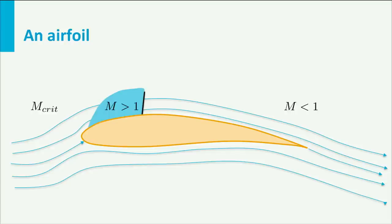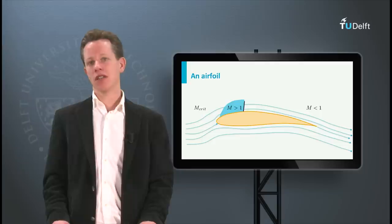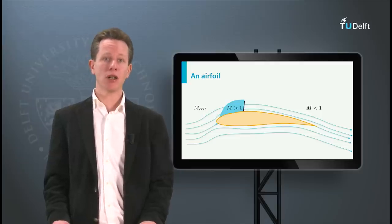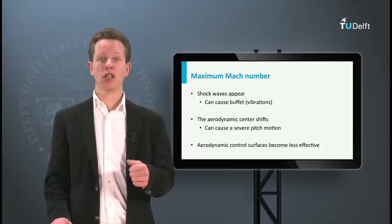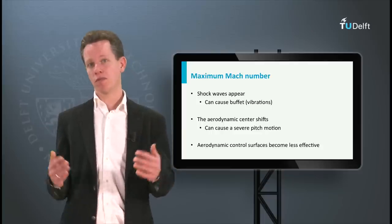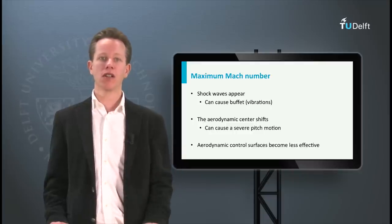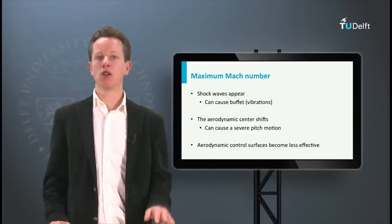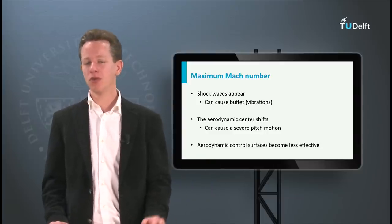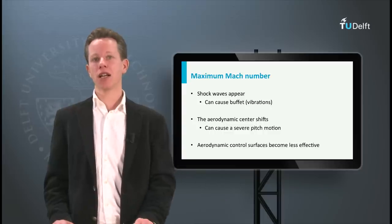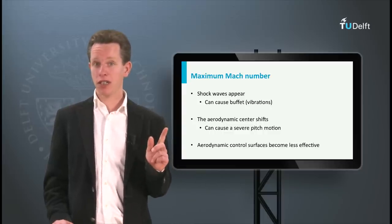Supersonic flow is associated with shock waves and it may significantly shift the aerodynamic center. It is not my intention to explain these effects in a great amount of detail. That would be the topic of an advanced lecture on aerodynamics. The only thing we need to take from these observations is that two things can happen at Mach numbers approaching Mach 1: shock waves start to appear on the aircraft, which can result in undesirable buffeting or vibrations, and a shift in the aerodynamic center can cause a severe pitch moment on the aircraft. Furthermore, aerodynamic control surfaces may become less effective or even ineffective. Due to these effects, it is quite dangerous to fly at high Mach numbers with an aircraft that is not specifically designed for it.